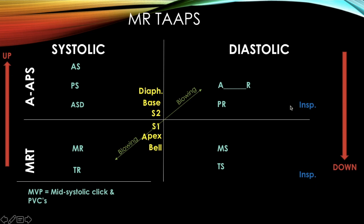Next, add inspiration and expiration — these murmurs become louder with either inspiration or expiration. Inspiration is on the right, expiration is on the left. The right side of the heart contains the pulmonic and tricuspid valves, so right-sided murmurs are louder with inspiration. The left side contains the mitral and aortic valves, so those murmurs are louder with expiration.